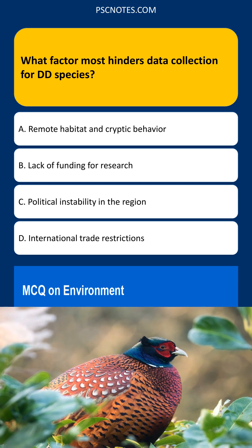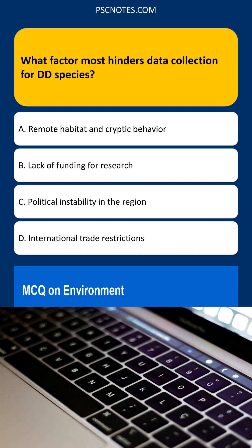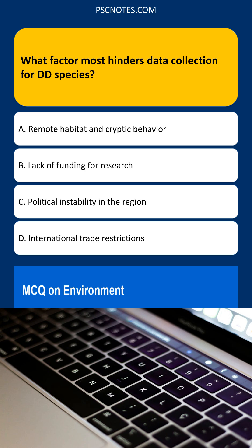Cryptic behavior — being secretive, camouflaged, or active at night — makes observation difficult. This combination directly impedes the collection of basic data on their distribution, population size, and threats: the very data needed for proper assessment.